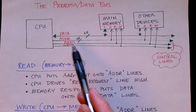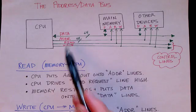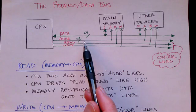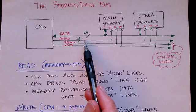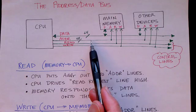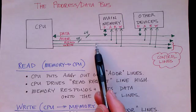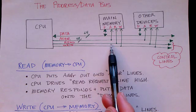What happens when the CPU wants to read data? Well, it puts an address out onto the address lines, so the CPU drives these lines high and low according to the bits in the address, and it also drives the read request line high to indicate that it wants to do a read.